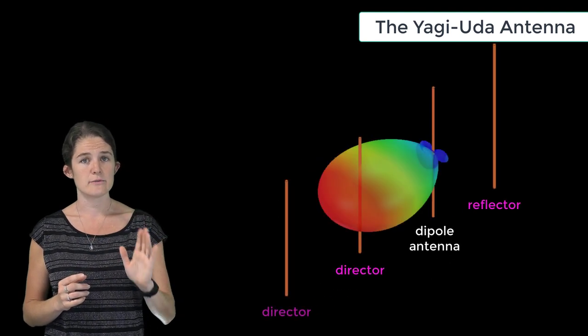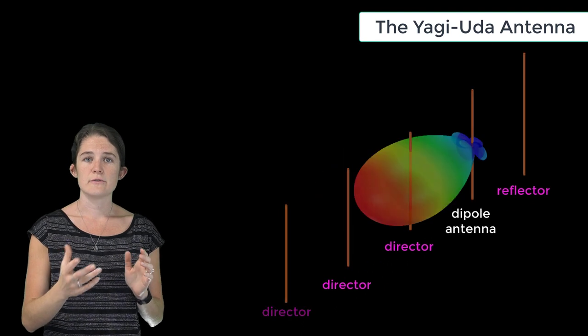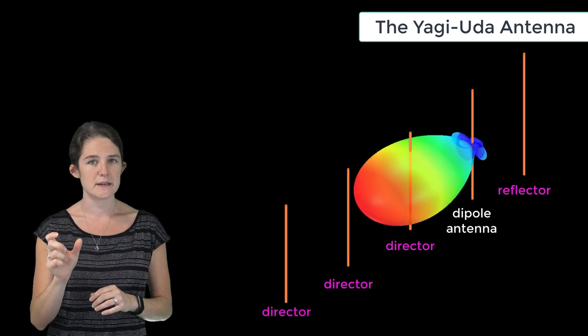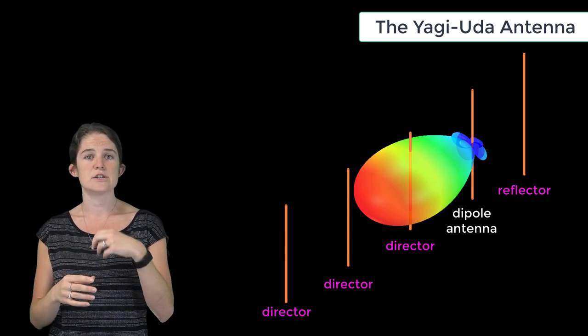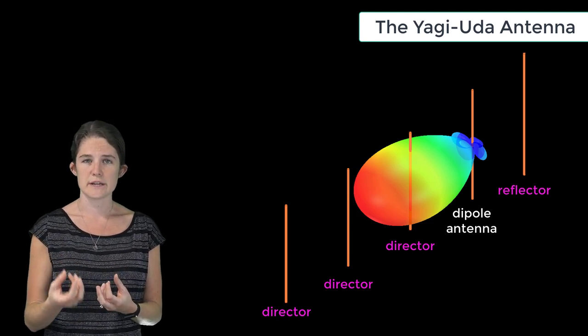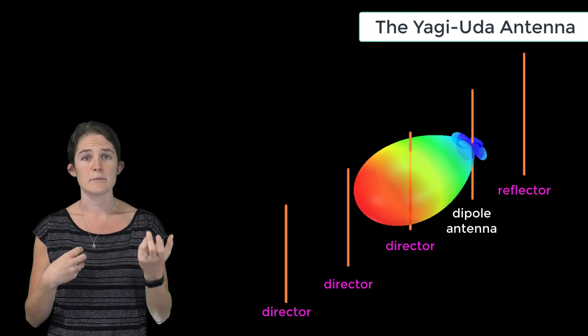Addition of a second director focuses the beam even further, and addition of a third director focuses the beam even further. It should be noted that there is a diminishing return with each additional element. The greatest advantage is achieved by the first added element, and progressively less advantage is achieved through each further addition. So at some point there's no longer a meaningful advantage to increasing the number of elements.